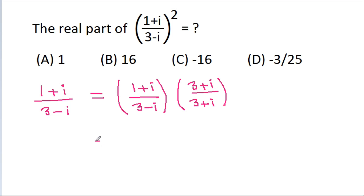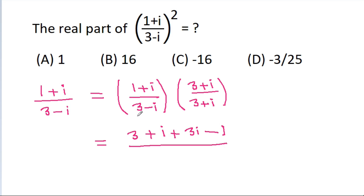then 1 times 3 is 3, plus 1 times iota is iota, plus iota times 3 is 3 iota, and iota times iota is iota square, that will be minus 1. By (a minus b)(a plus b) = a square minus b square, so 3 square is 9, minus iota square is minus 1.